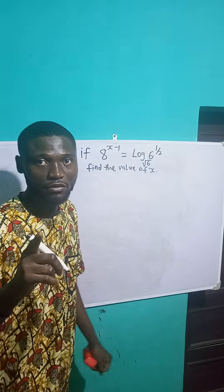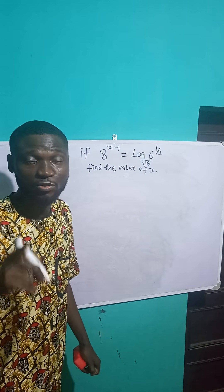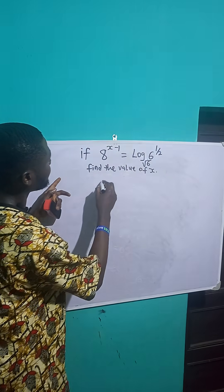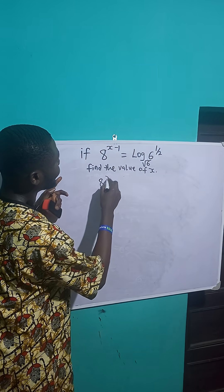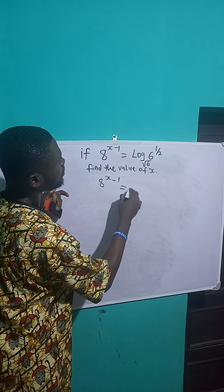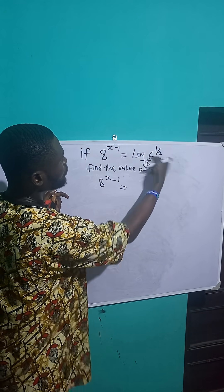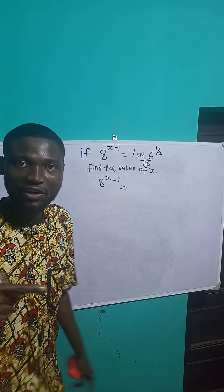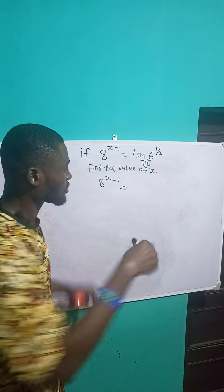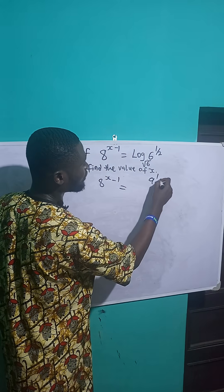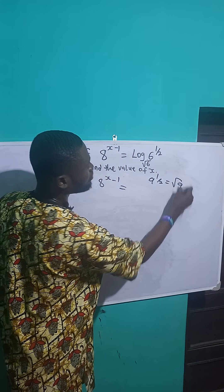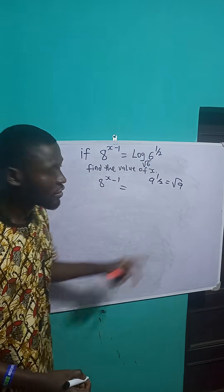This might appear very complex, but it is very easy. So I have a raised to the power x minus 1 is equal to... Do you know that 6 raised to the power 2 can be written as the square root of 6? Yes, if you have a raised to the power 1 over 2, this can be written as the square root of a.